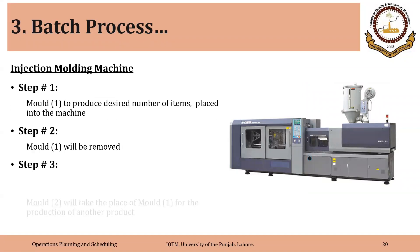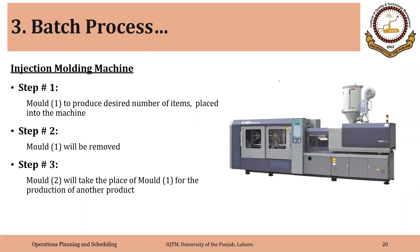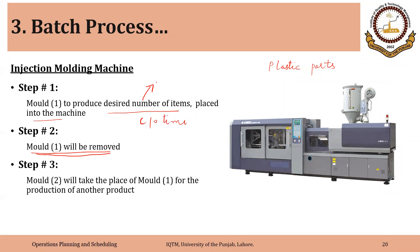A technical example could be the injection molding process, used to make plastic parts. Step one would be to mount mold one on the machine and produce the desired number of items. The second step would be to remove mold one, install mold two, and then make a certain quantity of the second type of product, repeating the cycle. Removing one mold and installing a new one requires some time — that is changeover time — and the quantity of parts produced in each run is a batch.